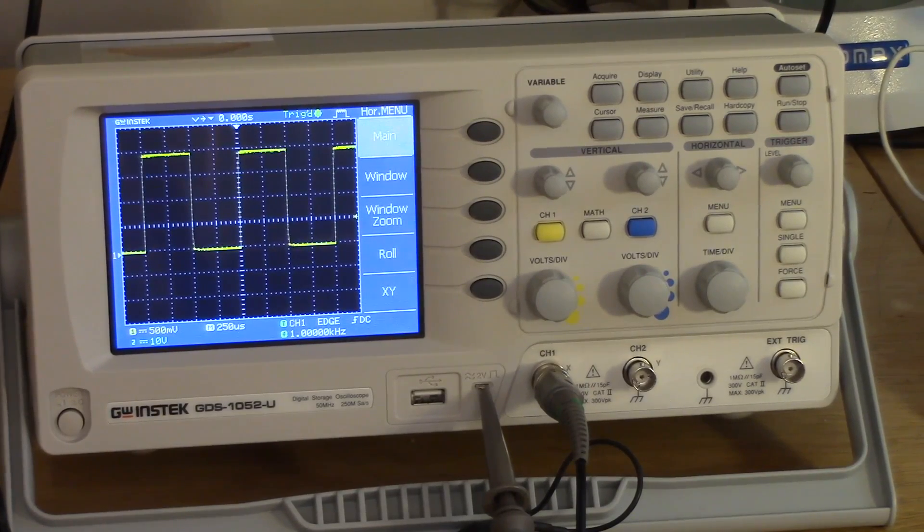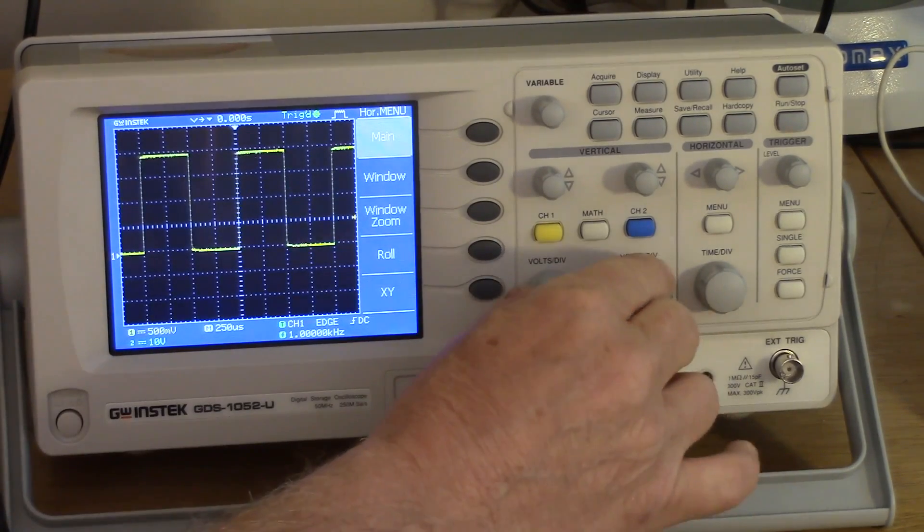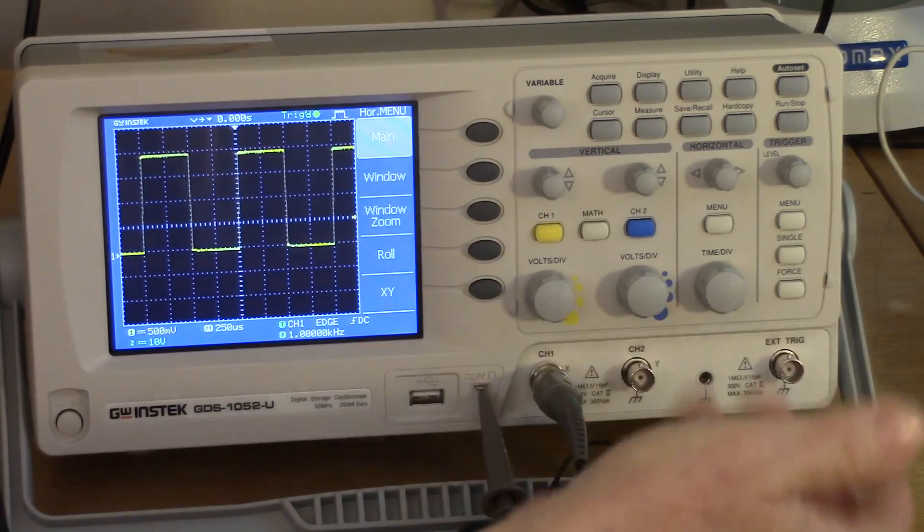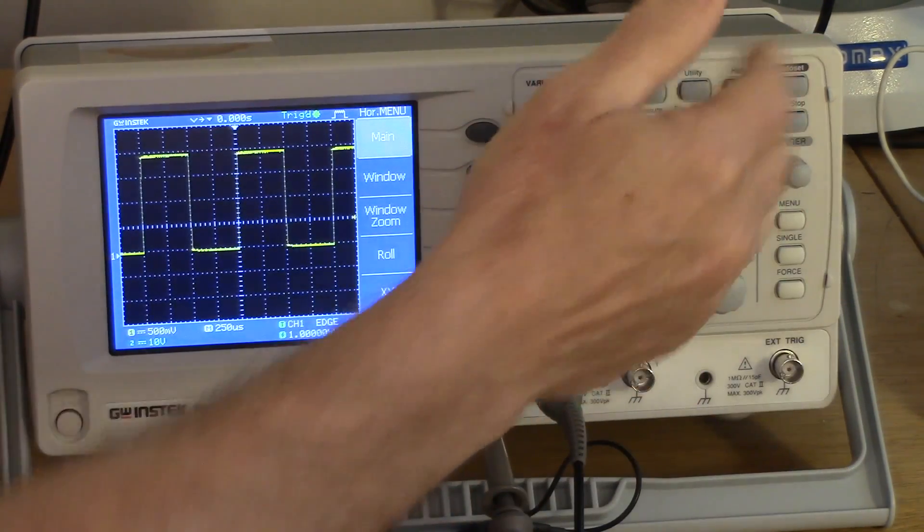So here's a close-up of the scope. As you can see, it has all the usual features of a bench scope. Two vertical channels with separate controls for each, a horizontal channel, full triggering, and the usual digital controls.